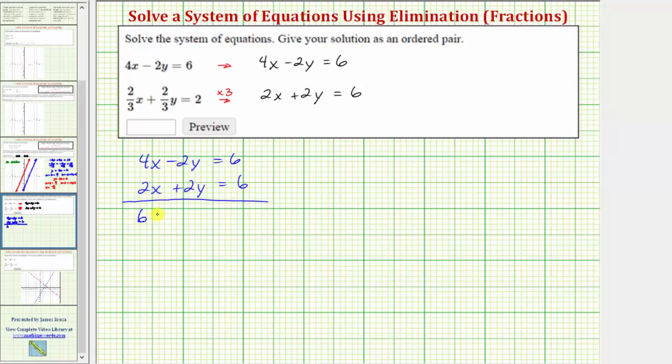4x plus 2x is 6x. Negative 2y plus 2y is zero, and therefore we have the equation 6x equals, six plus six equals 12. Dividing both sides by six to solve for x, we have x equals two.